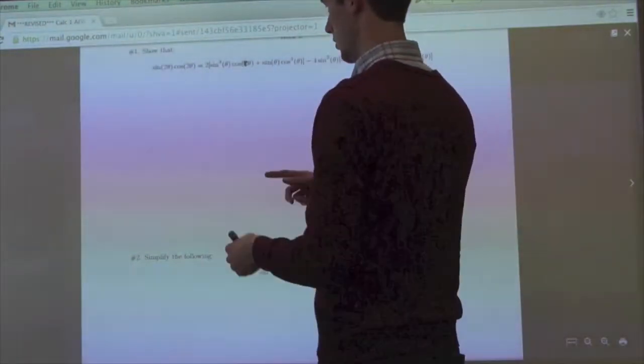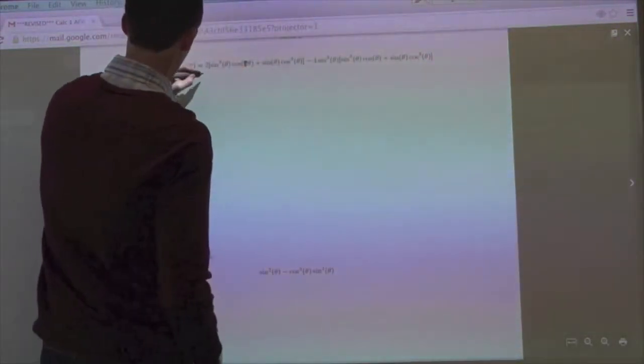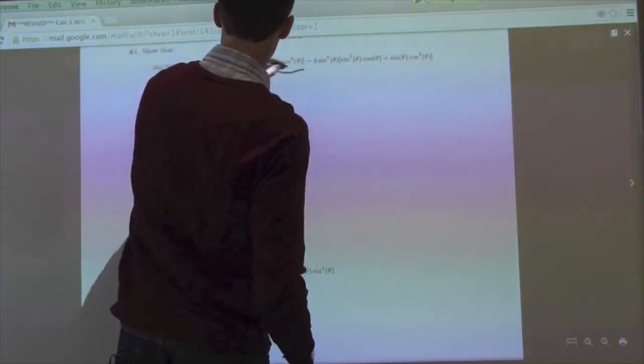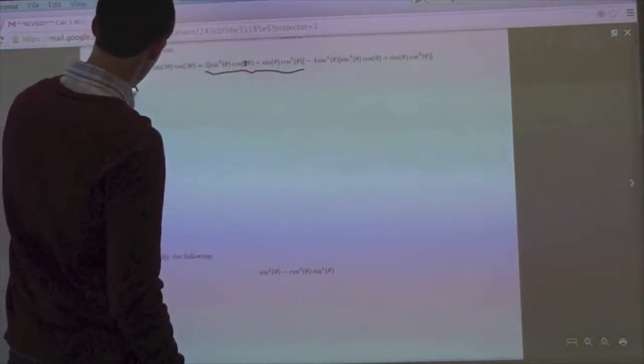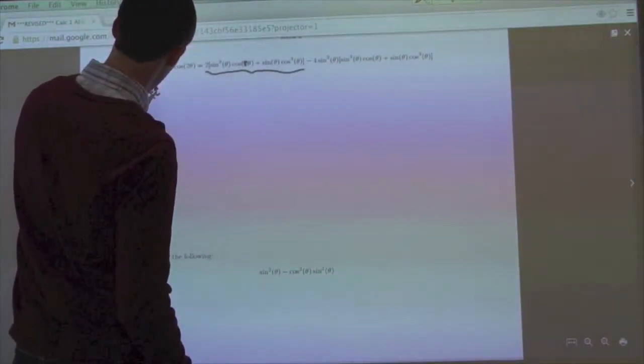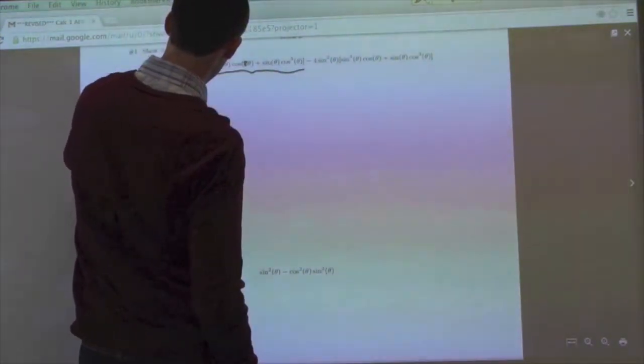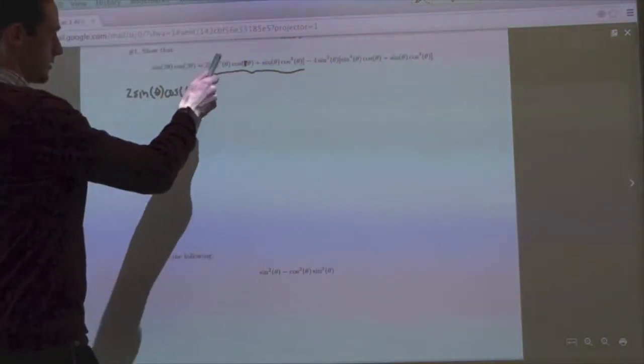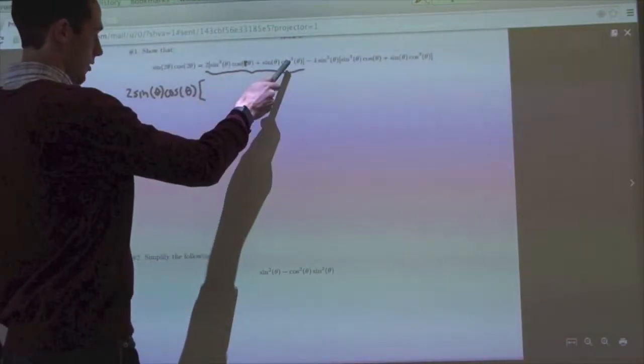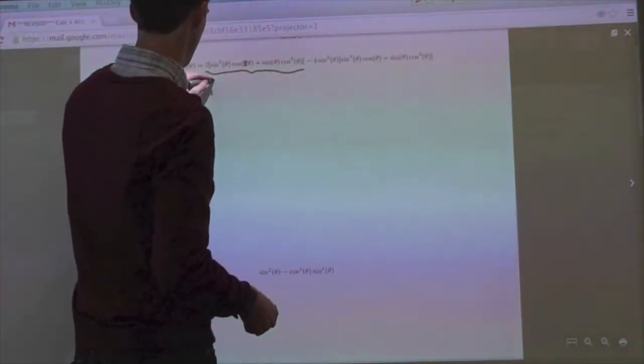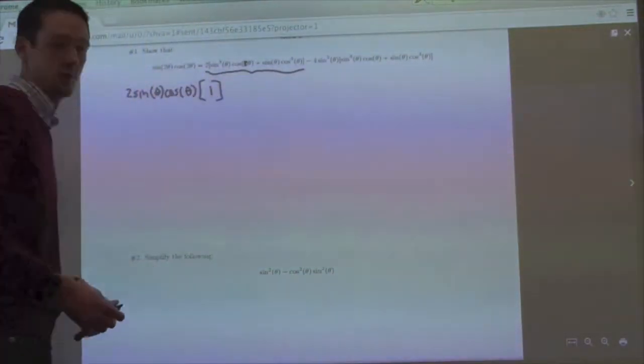So I'm going to pull sine times cosine for that, which will give me, for this chunk here, two sine cosine, and then what's left on the inside is a sine squared here, a cosine squared here, that's going to reduce down to one. So sine squared plus cosine squared is one.